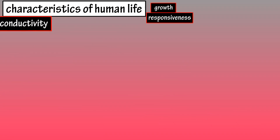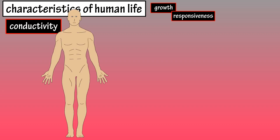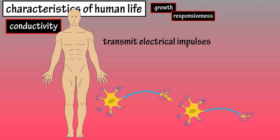Conductivity is an important characteristic of life, which is the ability of cells to transmit electrical waves from one point to another point in the body. This is accomplished by neurons, which are nerve cells.